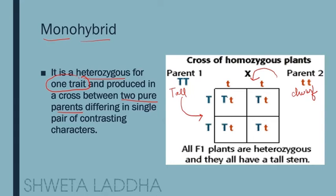In F1 generation, when they cross with each other through hybridization, we get a hybrid — a heterozygous capital T small t. Tallness is dominant so it is expressing itself, but small t dwarfness is not able to express in F1 generation. All the F1 hybrids are similar — all are tall. So, monohybrid is for one trait; the trait studied here is height.